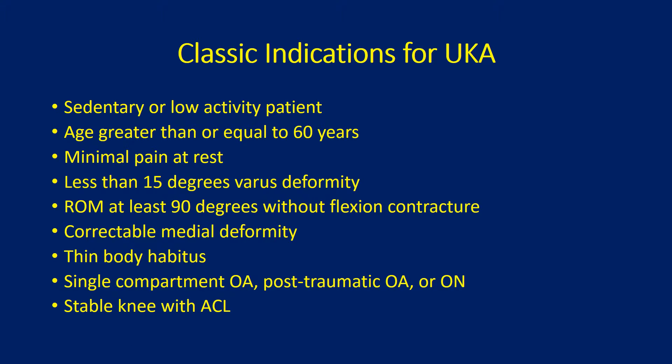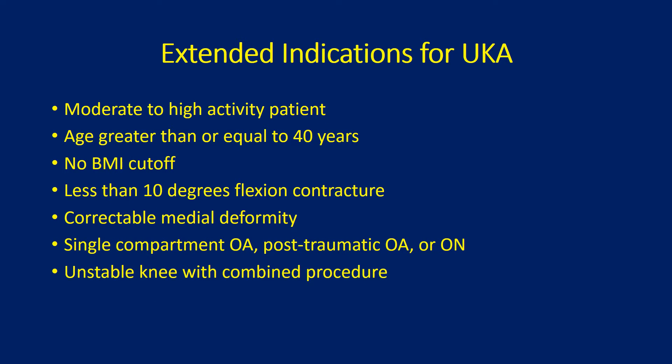The classic indications for a unicompartmental knee arthroplasty or partial knee replacement are someone who is sedentary at low activity, age greater than or equal to 60 years, minimal pain at rest, less than 15 degrees of varus deformity, range of motion of at least 90 degrees without a contracture, correctable medial deformity, thin body habitus, single compartment arthritis that's post-traumatic or osteonecrosis, and a stable knee with an ACL.